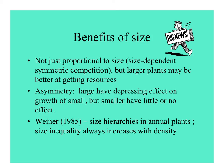Competition is usually size dependent: the bigger ones are better at getting resources. In addition, the large depress the growth of the small, while the small have no effect on the large — so competition is asymmetric. Jake Weiner proposed that this asymmetric competition leads to size hierarchies in annual plants, and greater inequality always comes with increasing density.